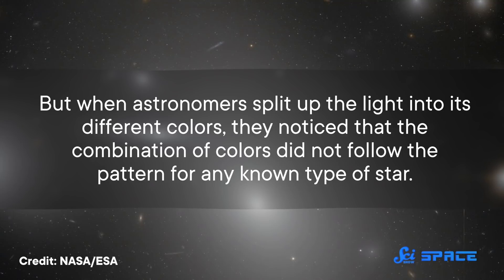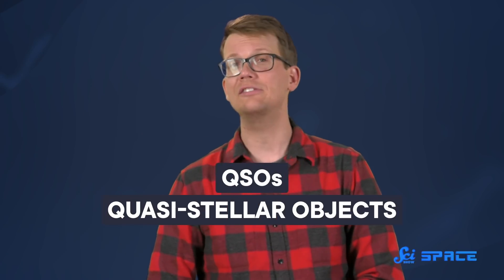But when astronomers split up the light into its different colors, they noticed that the combination of colors did not follow the pattern for any known type of star. So astronomers called them QSOs, quasi-stellar objects.